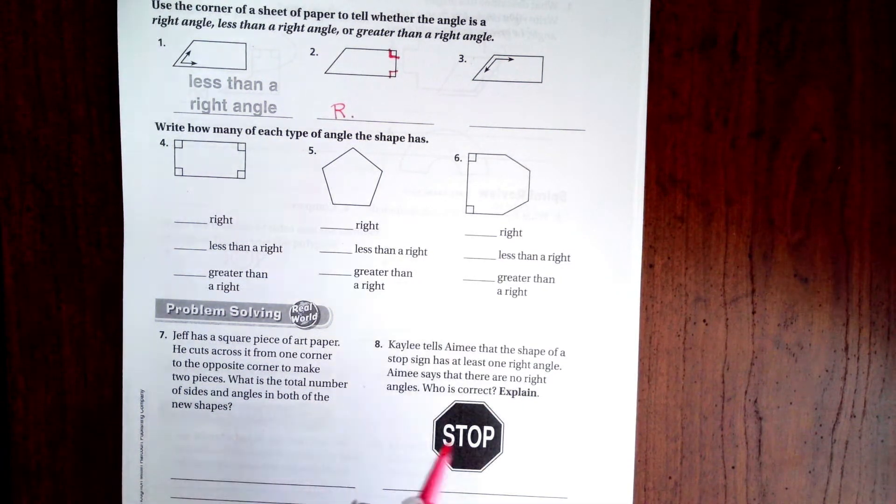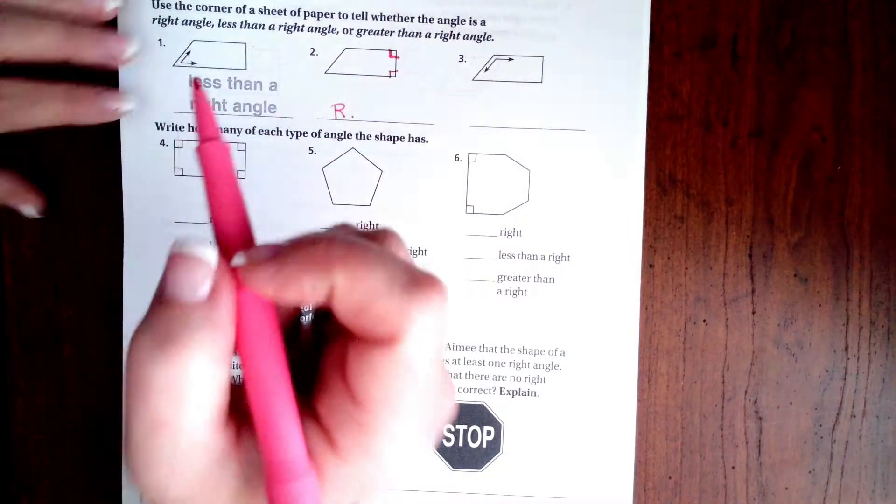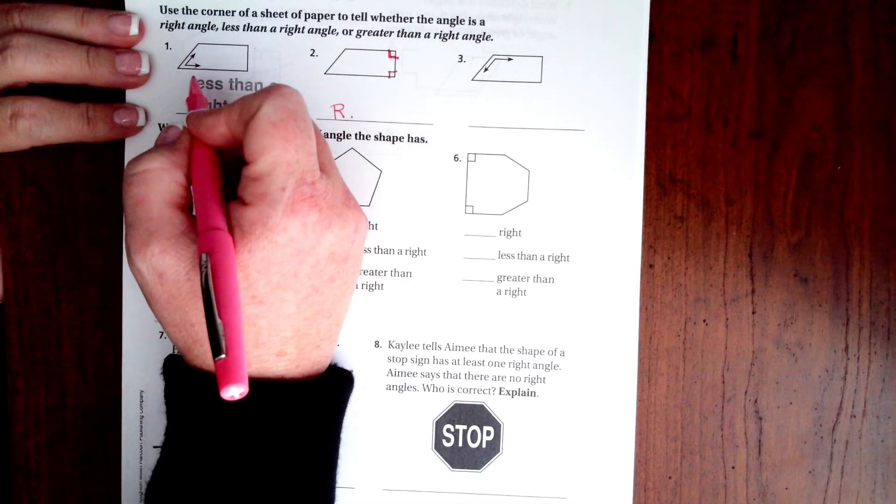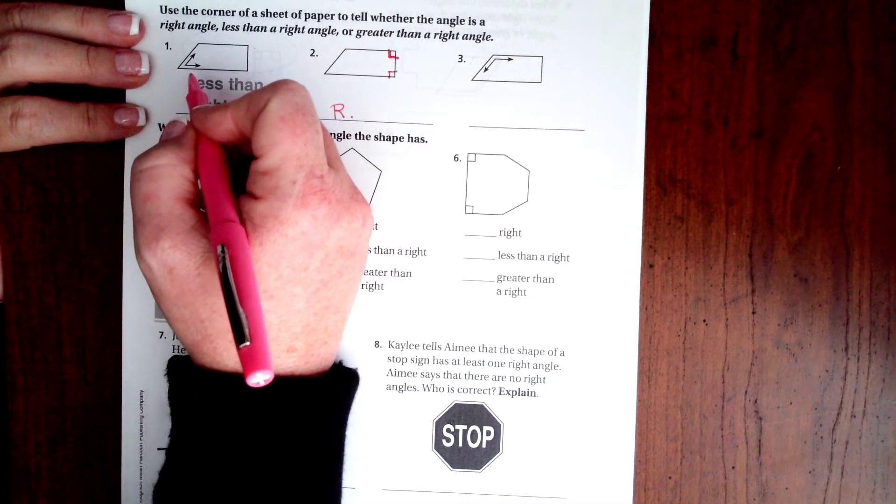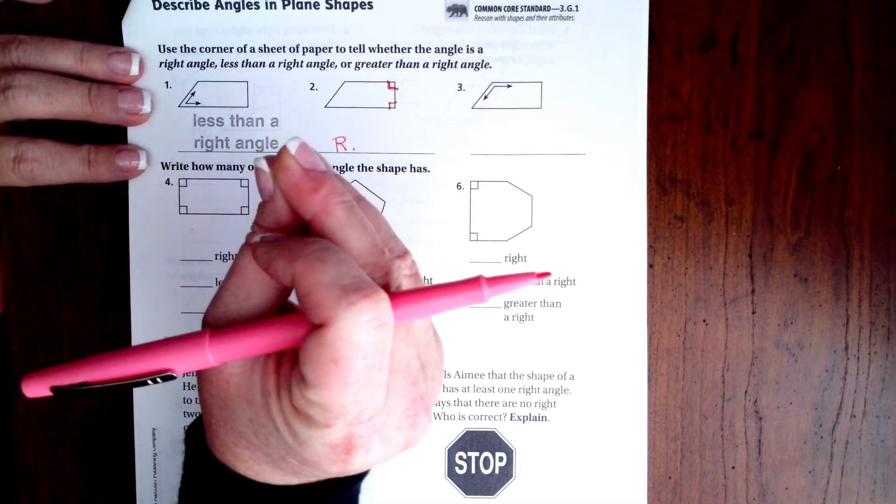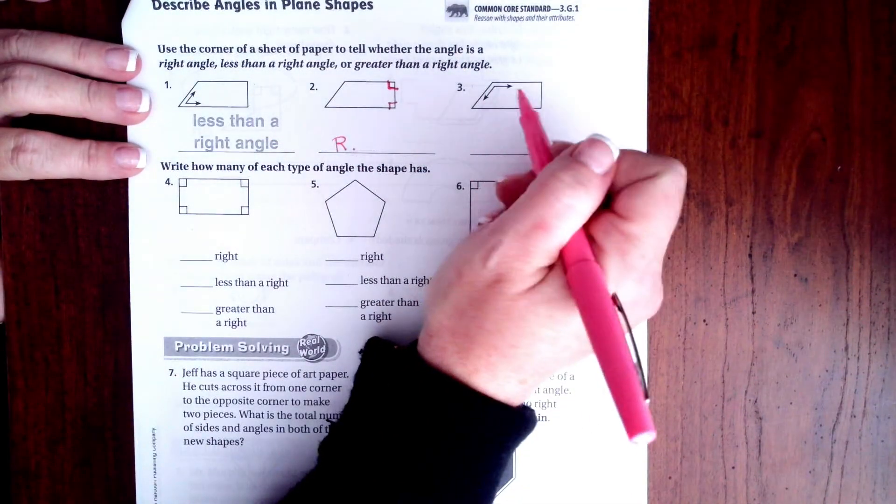Now when an angle is smaller than a right angle like this one, it's called an acute angle. I always think small, tiny, it's cute.